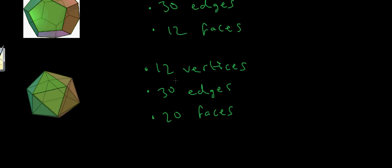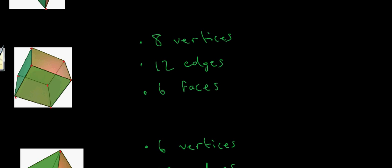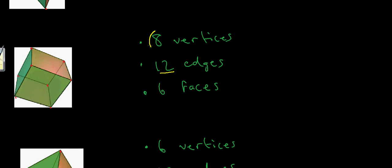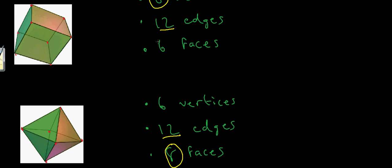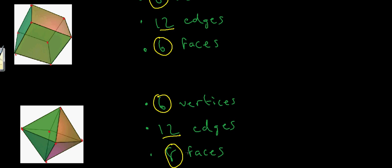There's another reason why I've been listing these three pieces of information about these platonic solids — there's a very important special relationship between some of these shapes. Let's go back and look at the cube and the octahedron. The cube has 12 edges, and the octahedron also has 12 edges. The cube has eight vertices, and the octahedron has eight faces. And the cube has six faces, and the octahedron has six vertices — so the number of vertices of one shape matches the number of faces of the other.